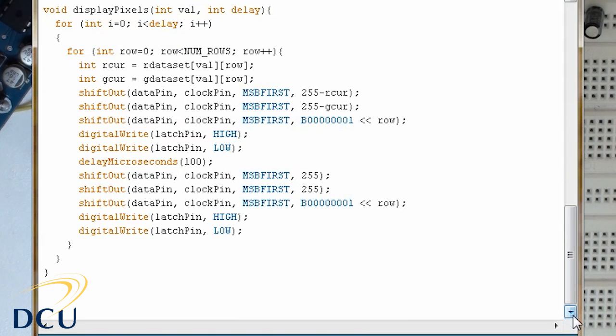The display pixels function takes the value that we want to display and the delay how many times we want to display it. What it does is it loops through each row, loads in the data set value, the current value from the data set. And then shifts out the red value, the green value and the row value to the 595s. You'll notice that we have to take the red green values away from 255 and that's because to get the pixel lit we have to set that individual column low.